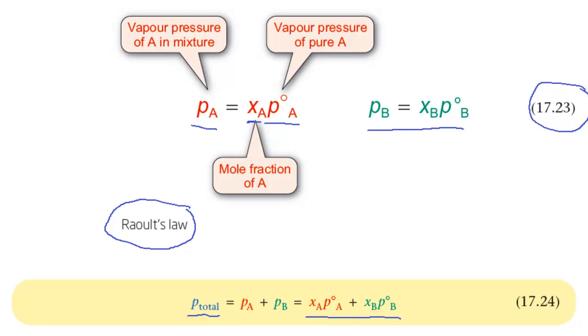It's important to remember that Raoult's law only applies to ideal liquid mixtures. In fact, the definition of an ideal liquid mixture is that it's a mixture that obeys Raoult's law, rather as the definition of an ideal gas is that it's one which obeys the ideal gas law.